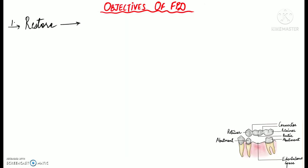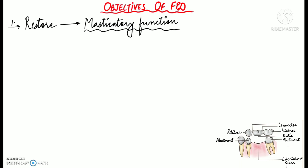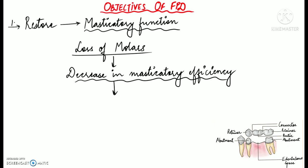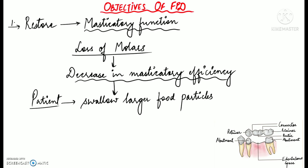Now we'll talk about the objectives of fixed partial dentures. The first objective of FPD is to restore masticatory function. Loss of molars has a greater impact on the patient's ability to masticate — it results in decreased masticatory efficiency, and the patient tends to swallow larger food particles, which leads to digestive system problems. FPDs help to replace the missing teeth and restore masticatory function.